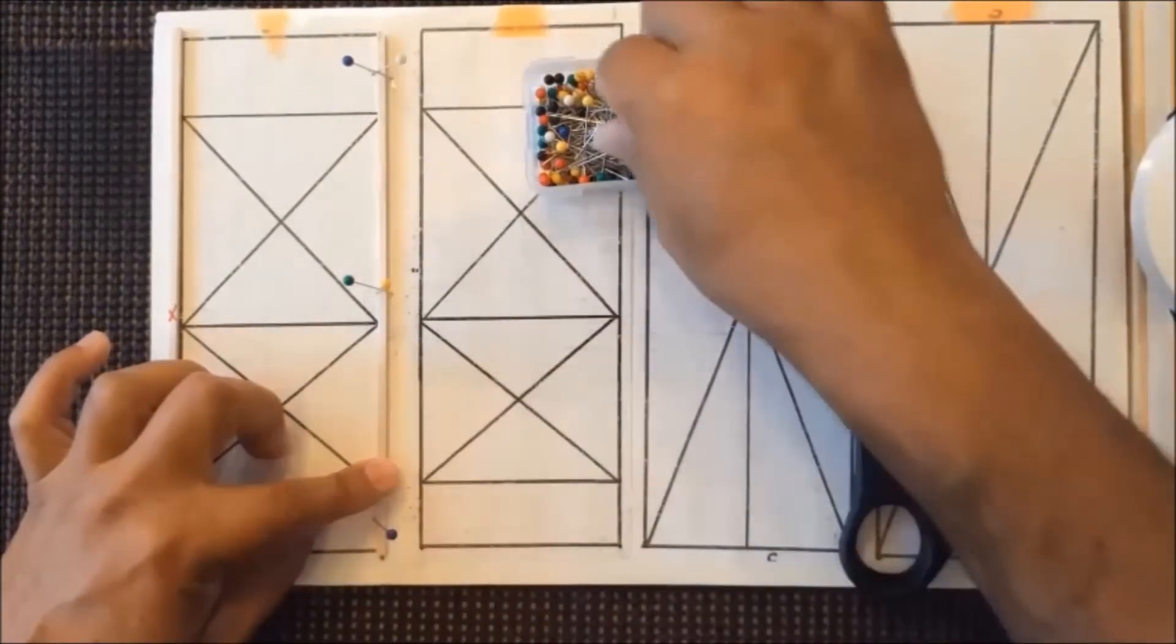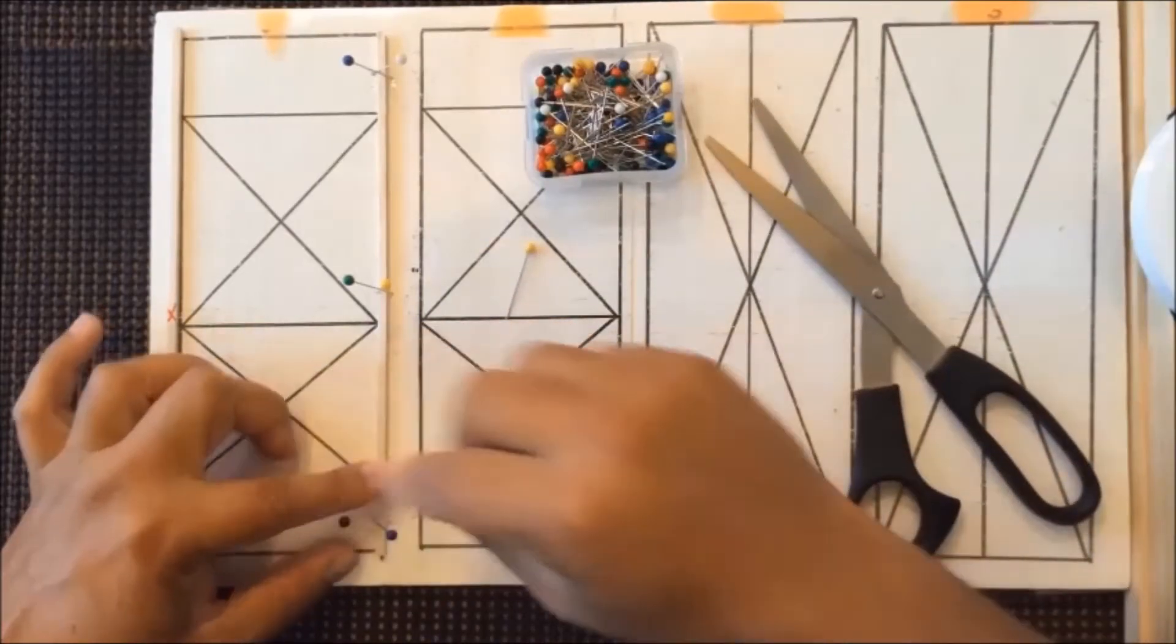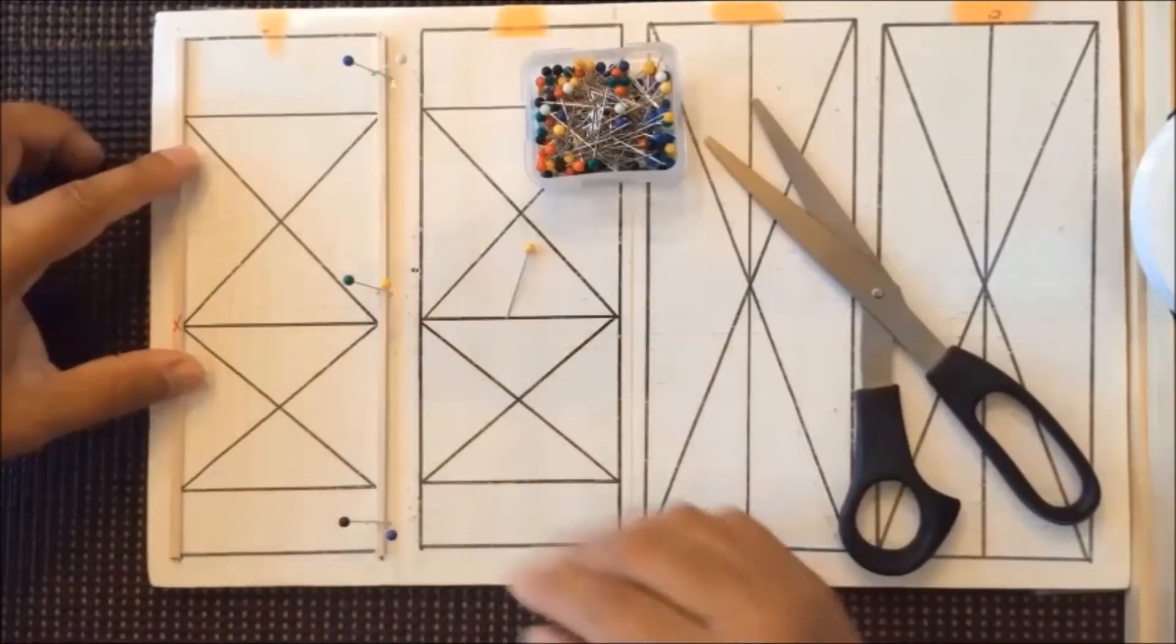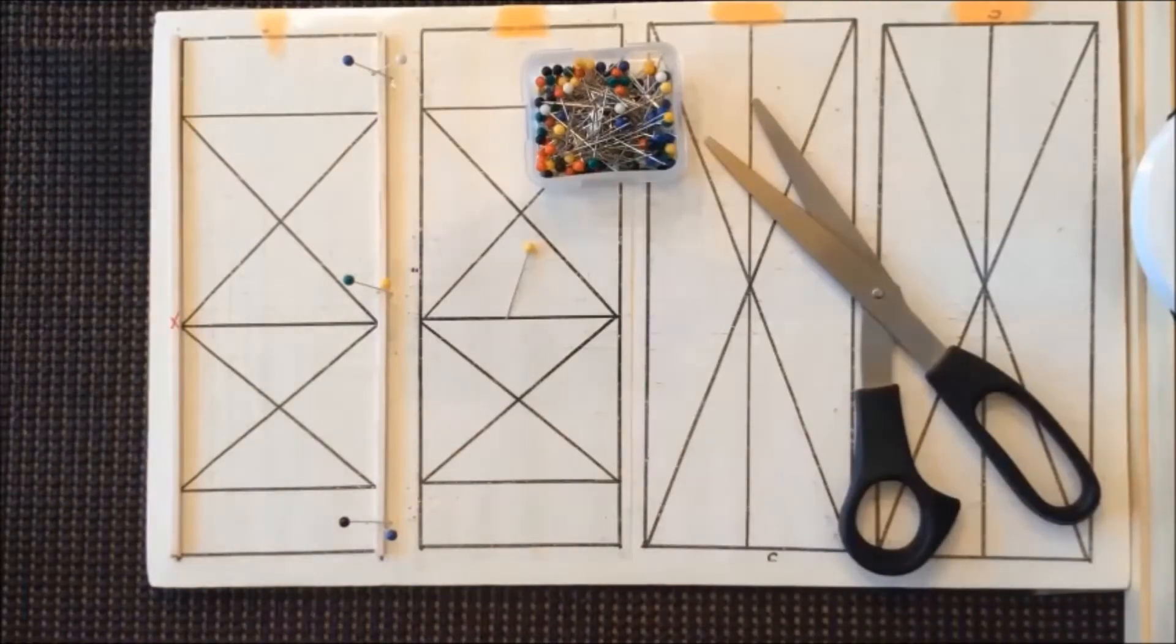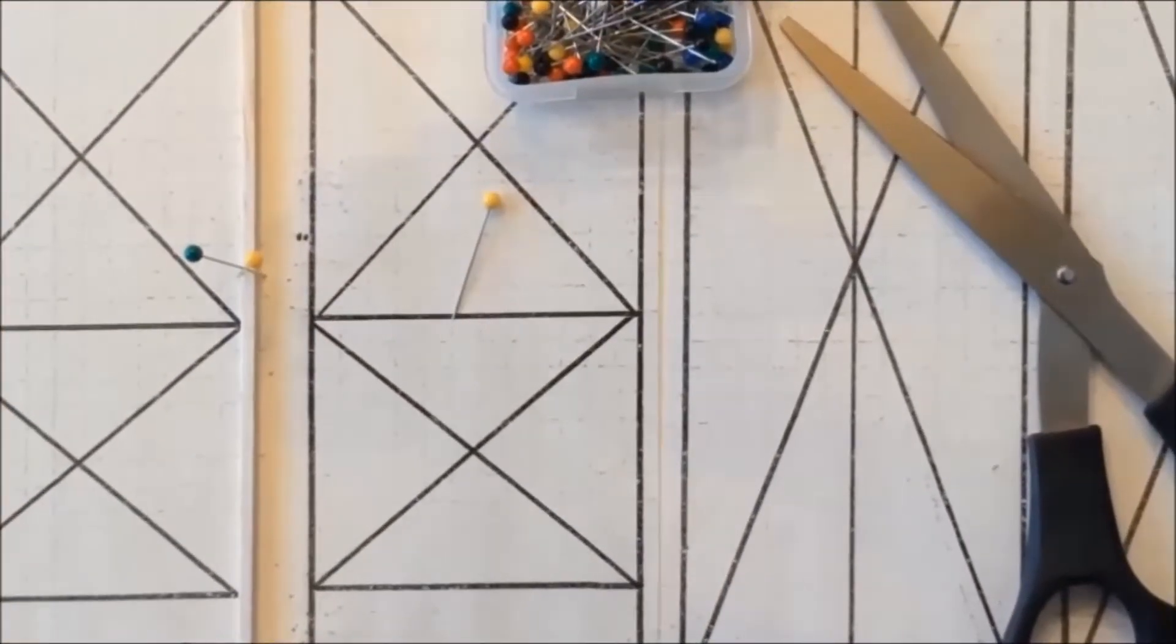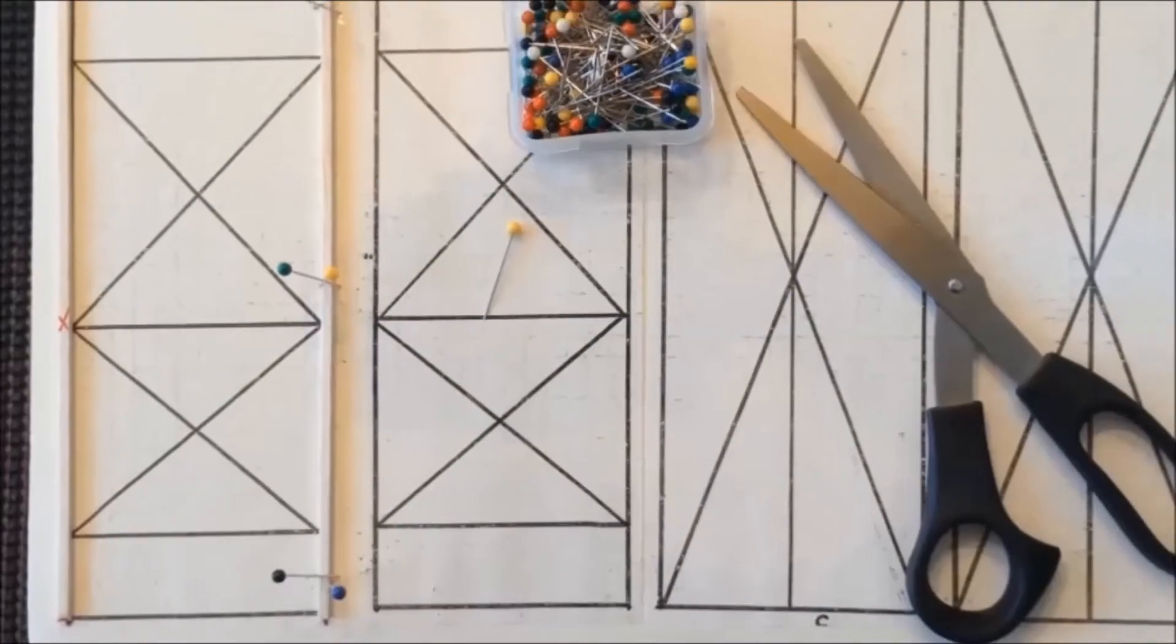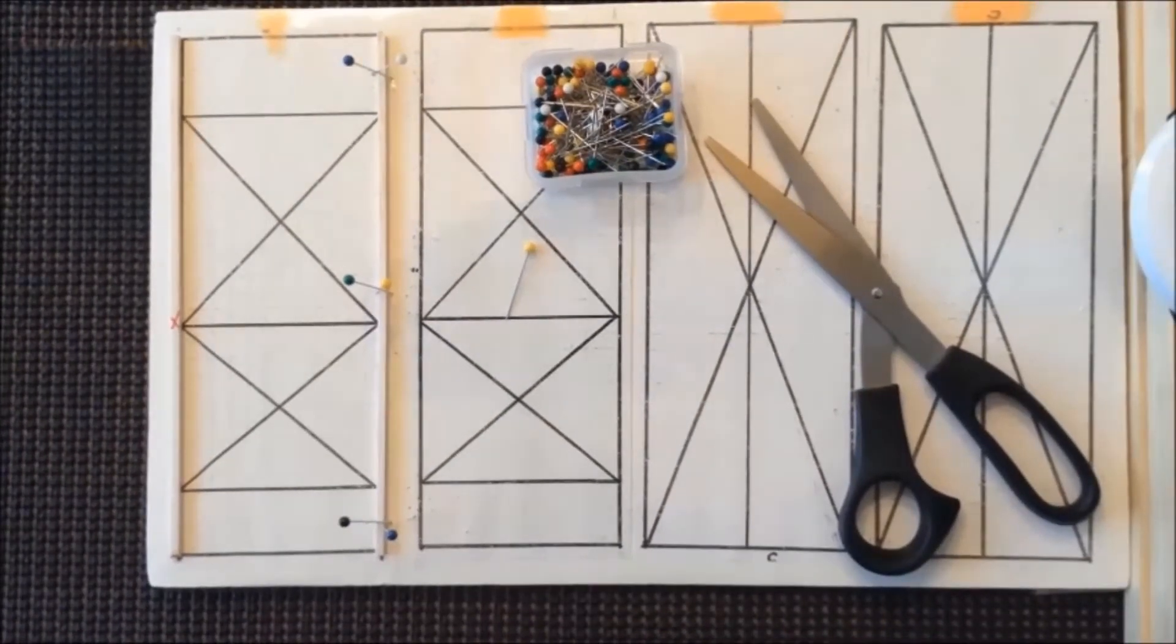When you have that piece pinned down, you can move on to continue pinning the remaining vertical lines. So as you see with the cross pinning, the pins are actually crossed over and holding the piece of wood in place so that as you're making your individual cuts on the inside, it does not move on you. I will continue pinning this down and then we'll do the horizontal lines next.